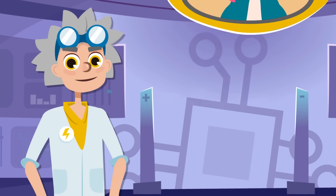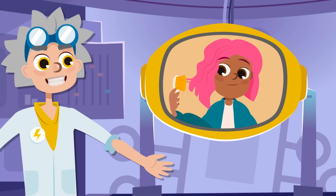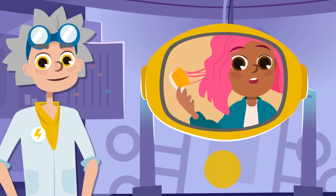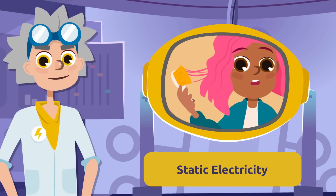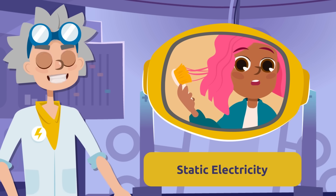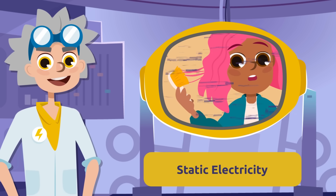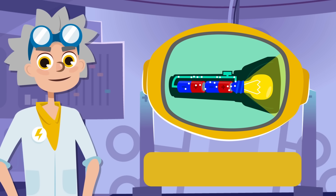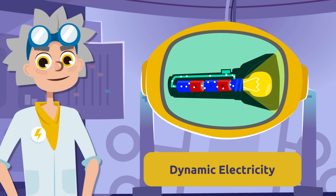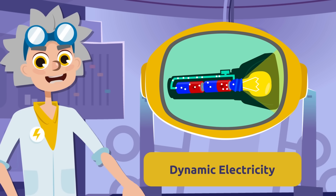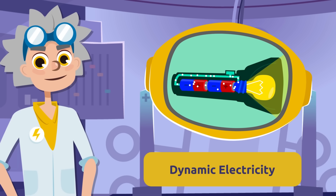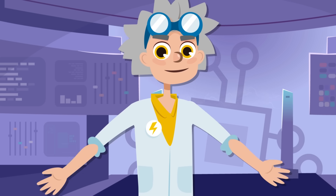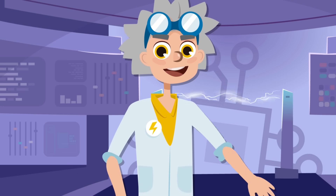An imbalance of positive and negative charges between two objects is called... static electricity! That's it. And the flowing of electric charge is called... dynamic electricity! Very good. Great job — see you at the next show!